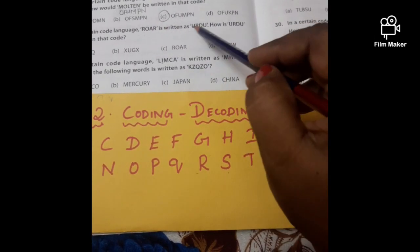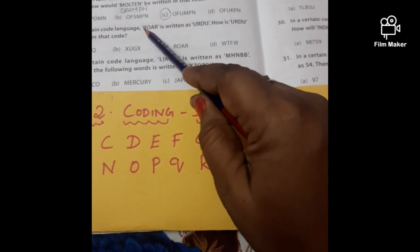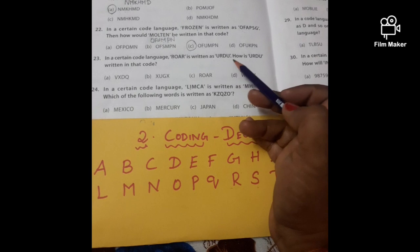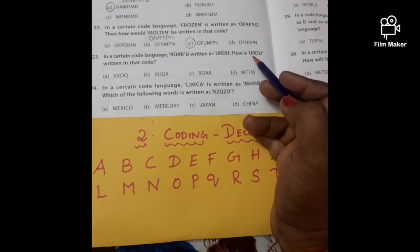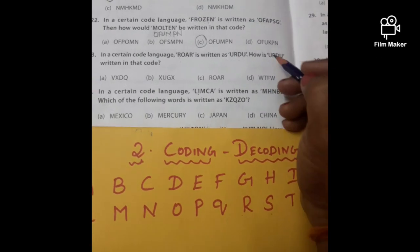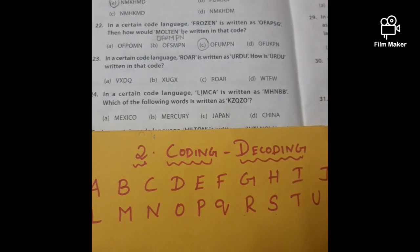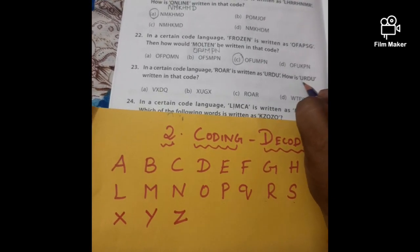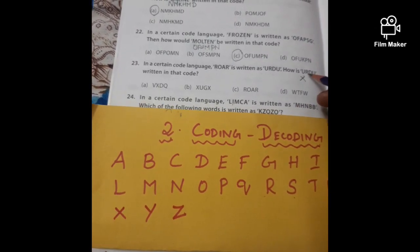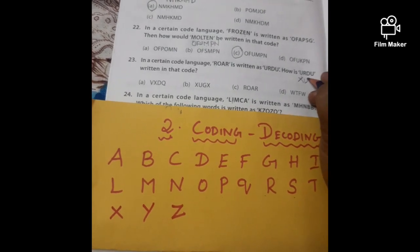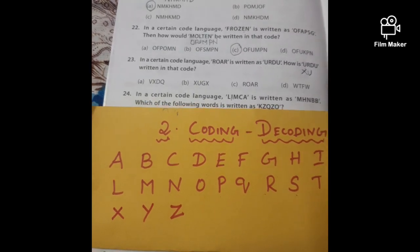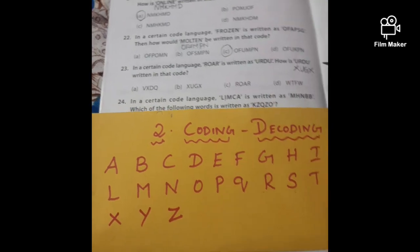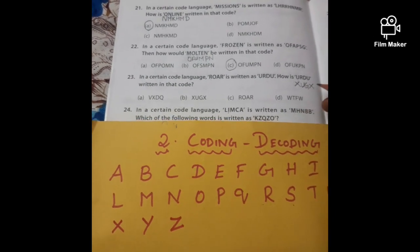Now applying the same rule for the word URDU: U — after U, skipping V and W, gives X. R — after R, skipping S and T, gives U. D — after D, skipping E and F, gives G. U again gives X. So U, R, D, U is written as X, U, G, X. That is the answer.